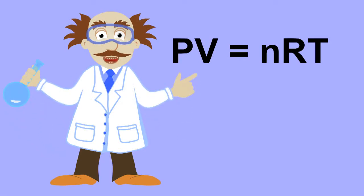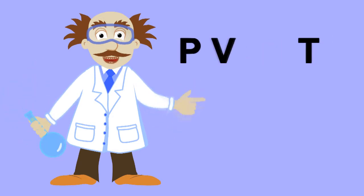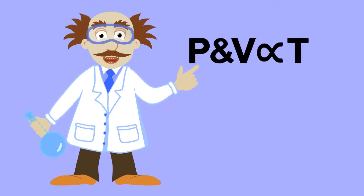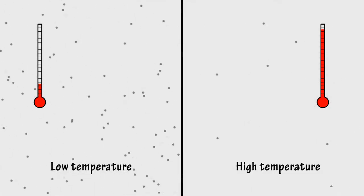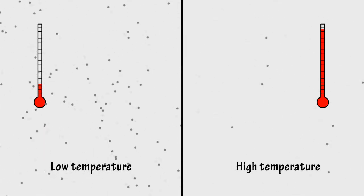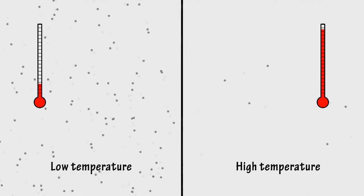Finally, if the number of gas particles remains constant and the temperature changes, then the pressure and or volume of gas change in direct proportion to the temperature. When you increase the temperature, you increase the average kinetic energy of the gas particles. They move faster and further apart.